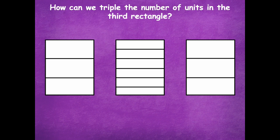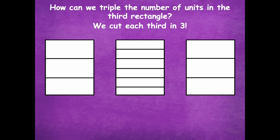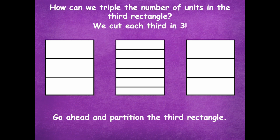So how can we triple the number of units in the third rectangle? We're only at three right now, so when we doubled from three we went to six. Now we're at three still in the third rectangle, but we need to triple it. It's kind of like counting by threes — three, six, nine. How do we make this into nine parts? We can cut each third in three. So go ahead and partition the third rectangle — each third partition into three parts. Pause the video, do that, and click play when you're ready for the next step.